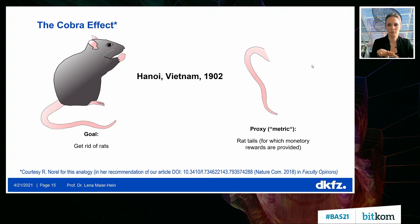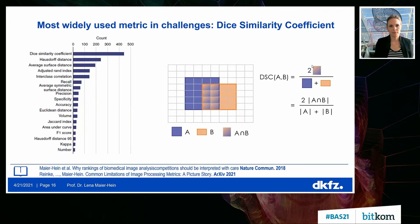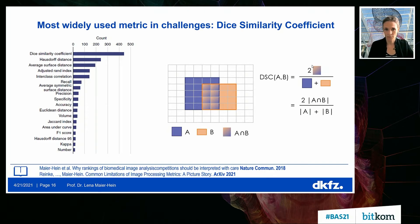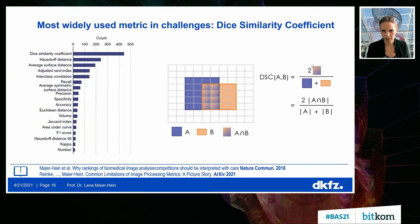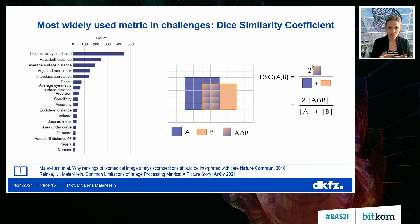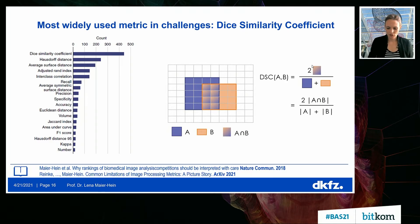The DSC — the Dice similarity coefficient — which for experts is very closely related to the IoU (intersection over union), is the most widely used metric in competition: it was used in more than 400 of the competitions we analyzed. It gives a value between 0 and 1. You have a reference contour by an expert — blue is the reference contour, orange is the algorithm output — you measure the overlap and get a value between 0 (no overlap) and 1 (full overlap). This sounds plausible and is plausible in many cases, but let me show you some of the pitfalls.